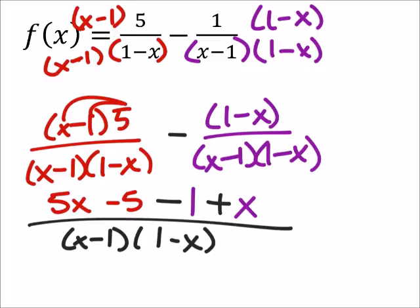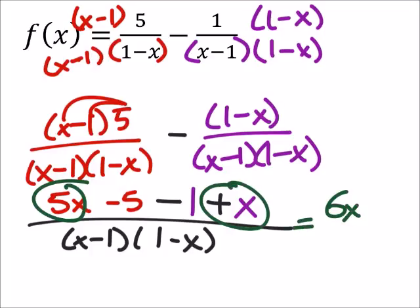So, at this point, we're just looking to combine like terms. So, I got a 5x plus an x, which would give me a 6x. And then also, we got a negative 5 and a negative 1, which would be a negative 6.